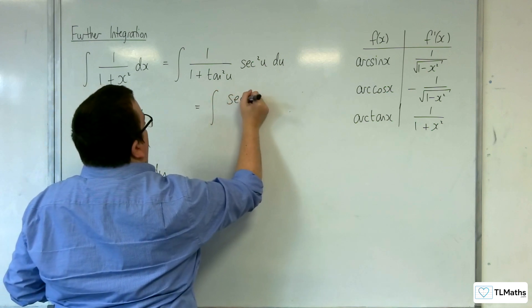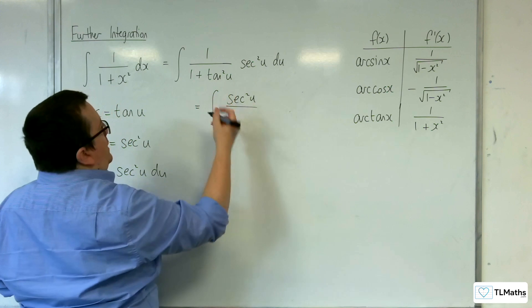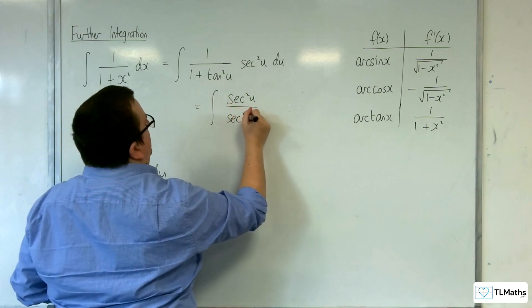So, in the numerator, we have sec squared u. And 1 plus tan squared is also sec squared u.